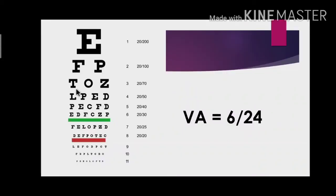Let me explain again with another example. We are testing visual acuity using the Snellen chart placed at 6 metres. We ask the patient to read from top to bottom, and the patient reads until the 6/24 line. So we record the visual acuity as 6/24. The 6 is the testing distance. The denominator 24 tells us that at 24 metres, the letters on that line subtend an angle of 5 minutes of arc at the retina. If a normal eye can see this letter at 24 metres, the eye being tested can only see it at 6 metres.